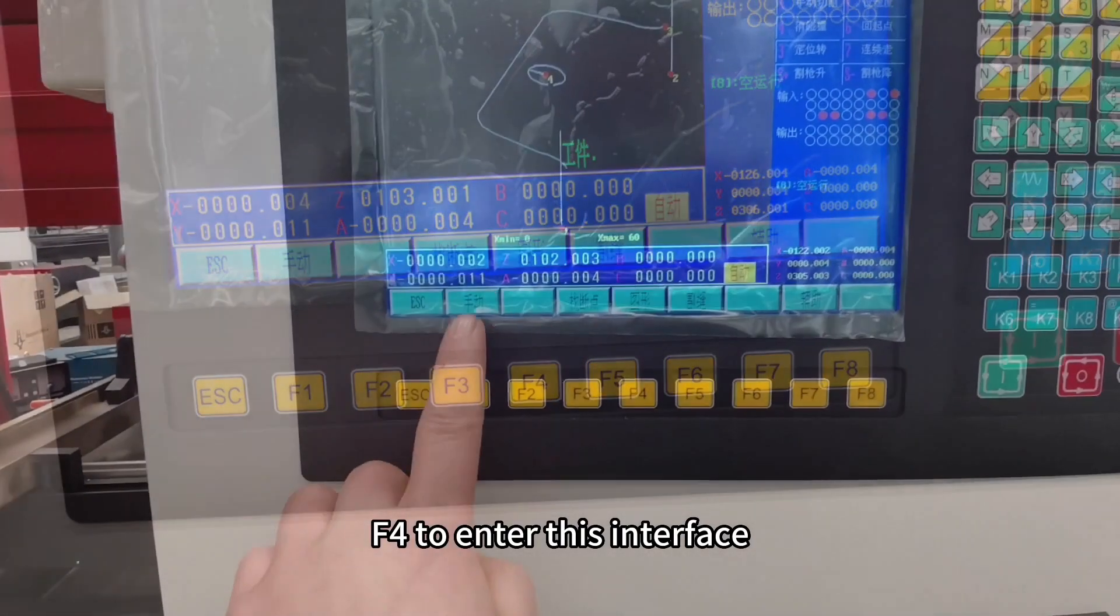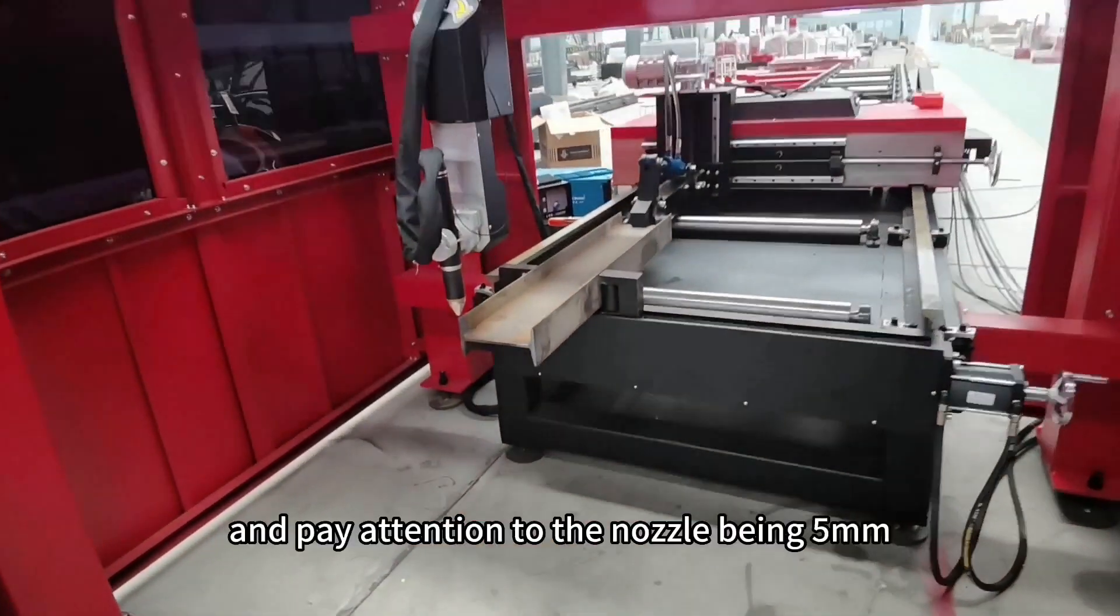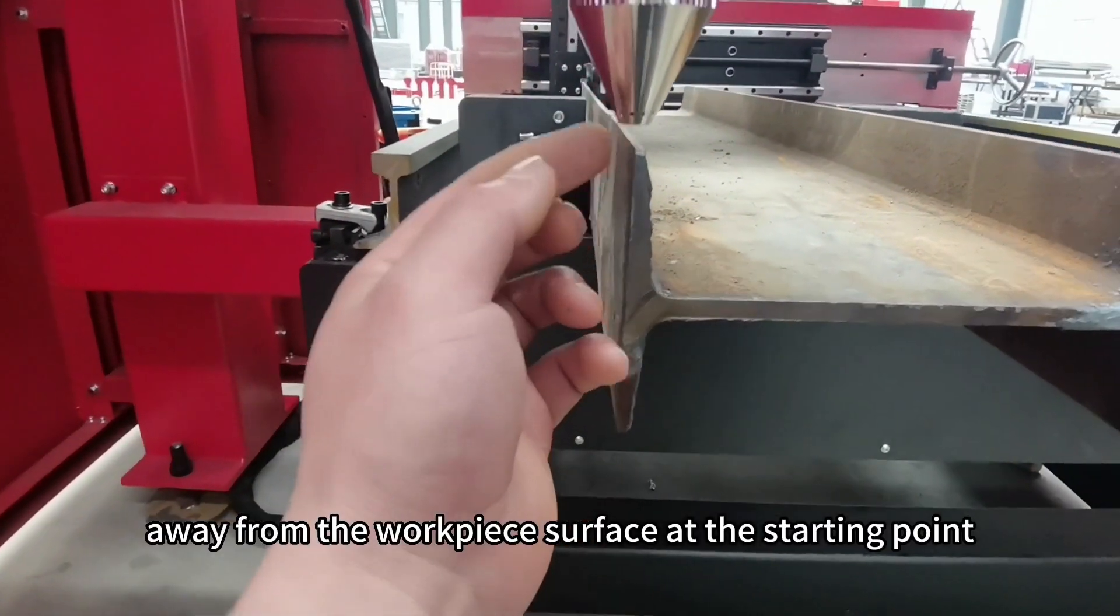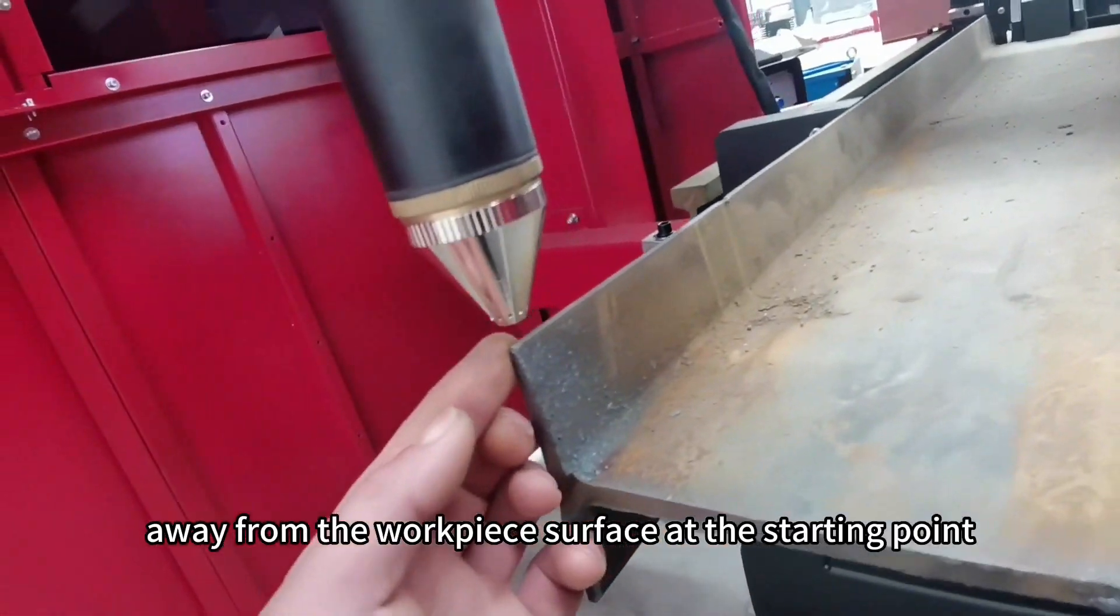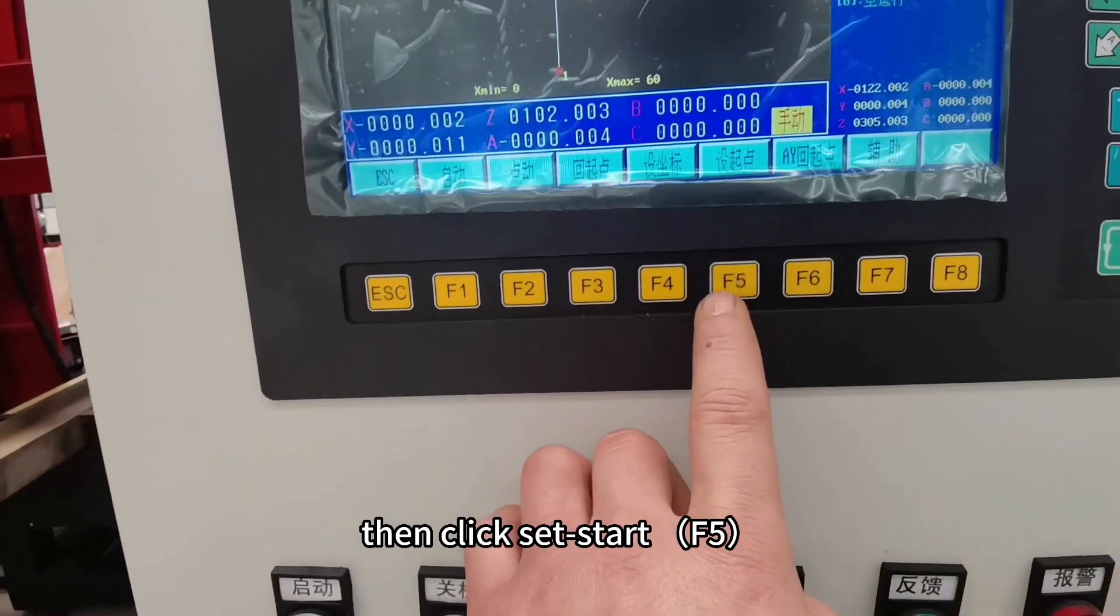F4 to enter this interface. Click manual to adjust the cutting torch to the starting point, and pay attention to the nozzle being 5 mm away from the workpiece surface at the starting point. Then click set start, F5.